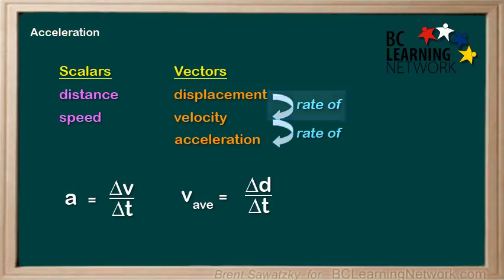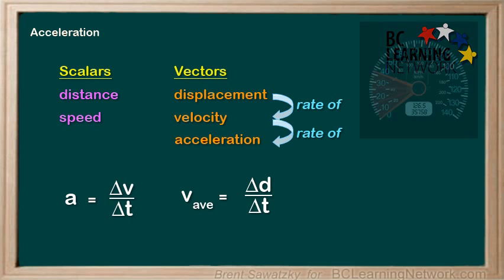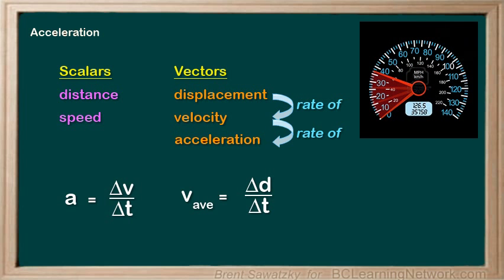Velocity is the rate of change of displacement, that is, how fast the displacement is changing. Acceleration is the rate of change in velocity, how fast velocity is changing. Acceleration is a little more difficult to visualize. Rather than reading the speedometer in a car, acceleration is more how fast the speedometer readout or needle is changing.